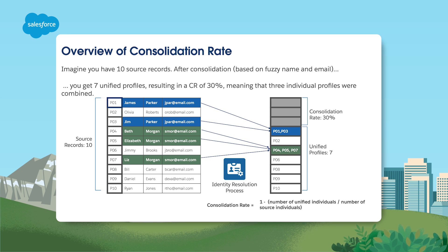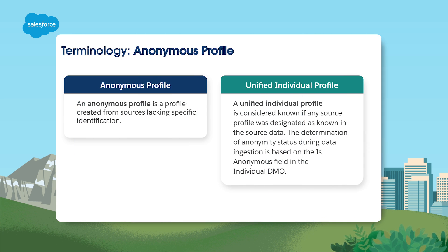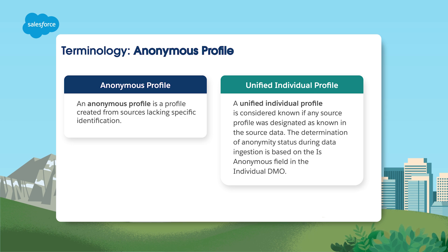To adjust the consolidation rate, consider adding or removing match rules. The consolidation rate reacts to rule sets for matching, so it's important to set them carefully. If a source profile is marked as known, the unified profile is known. Anonymous unified profiles are only made from other anonymous profiles, which are created from unidentified sources. The is-anonymous field on an individual data model object, or DMO, determines the anonymity status during data ingestion.